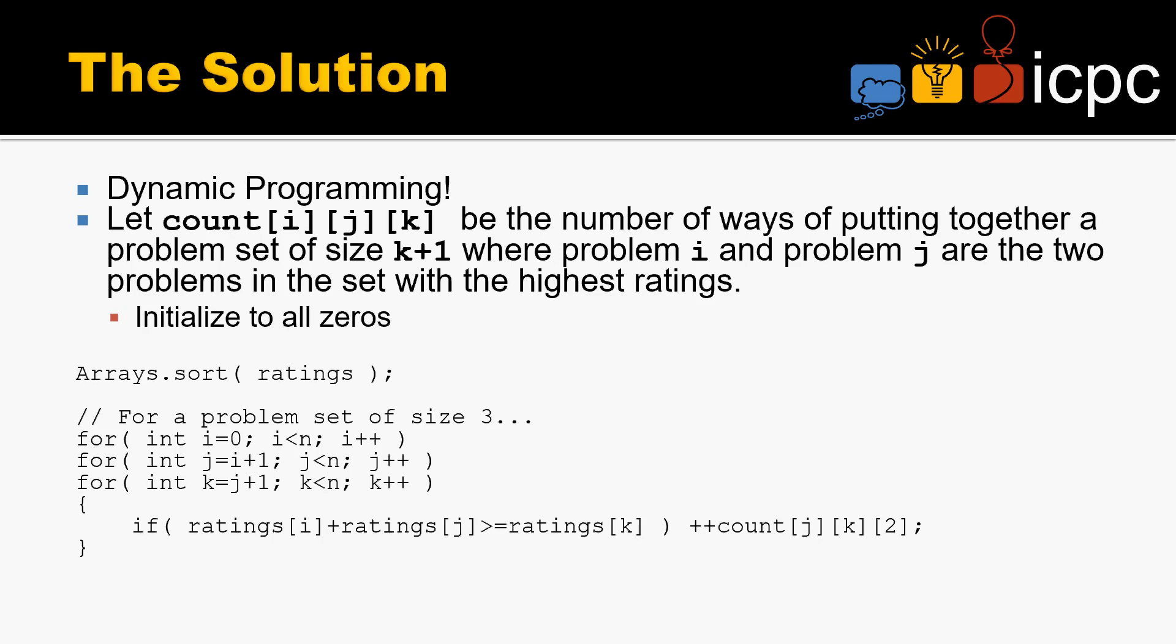You'll notice that j starts at i+1 instead of 0. k starts at j+1 instead of 0. So i, j, k are increasing in rating. So j has to be the higher of i and j. So j and k have to be the highest 2 of that combination.